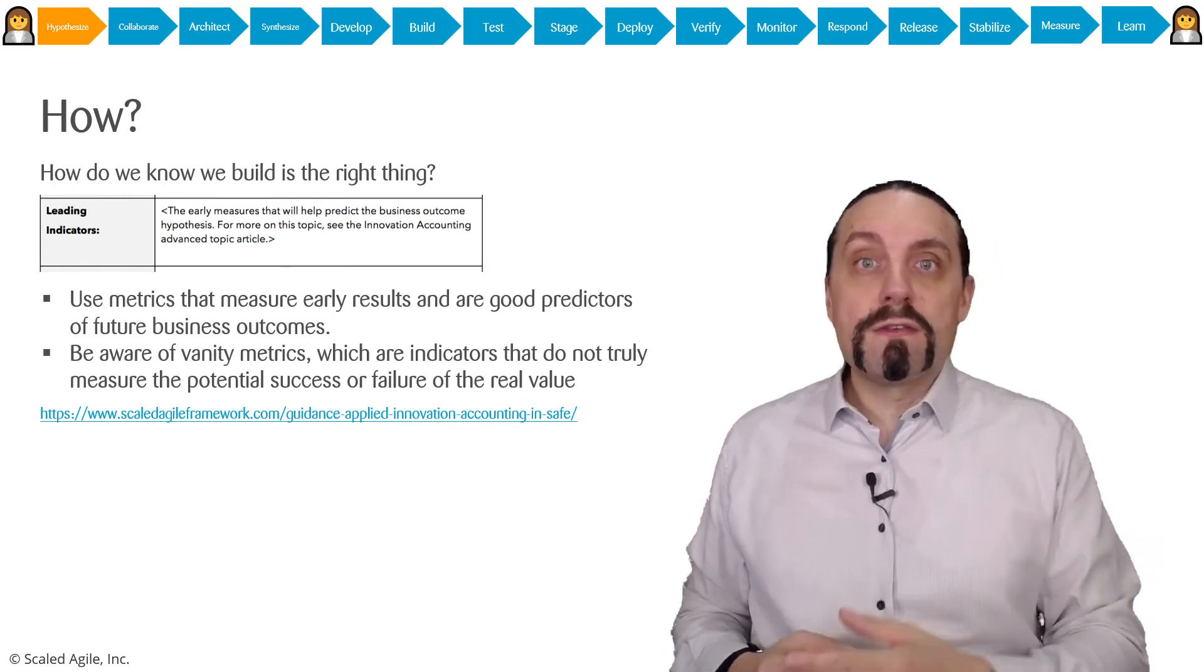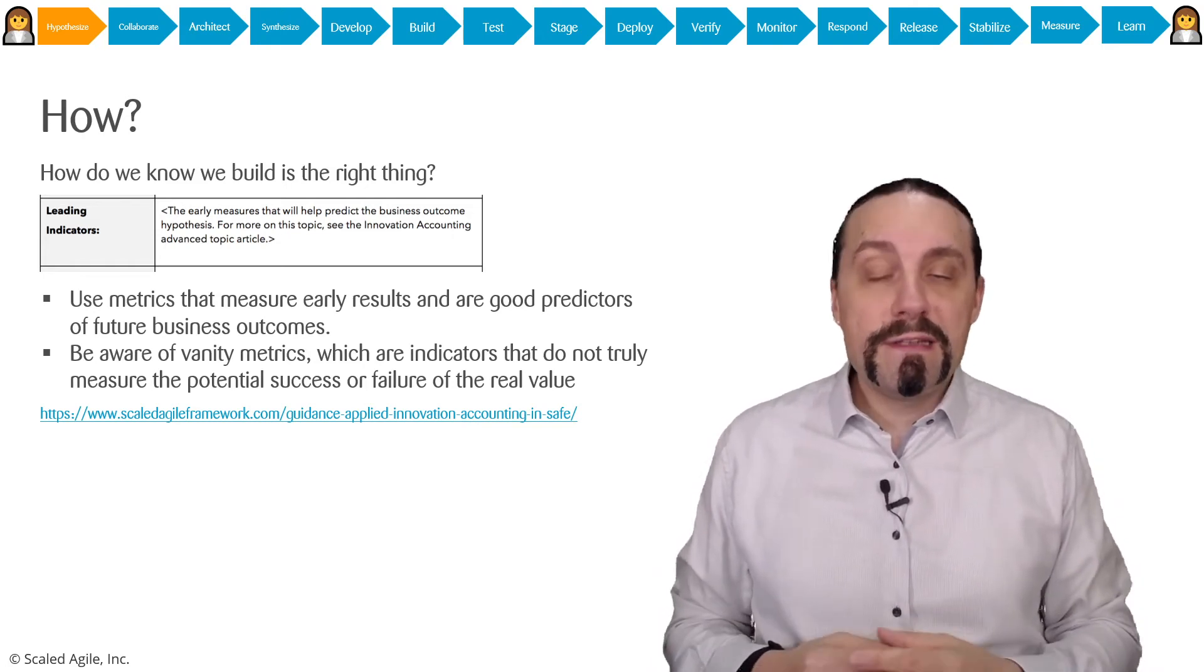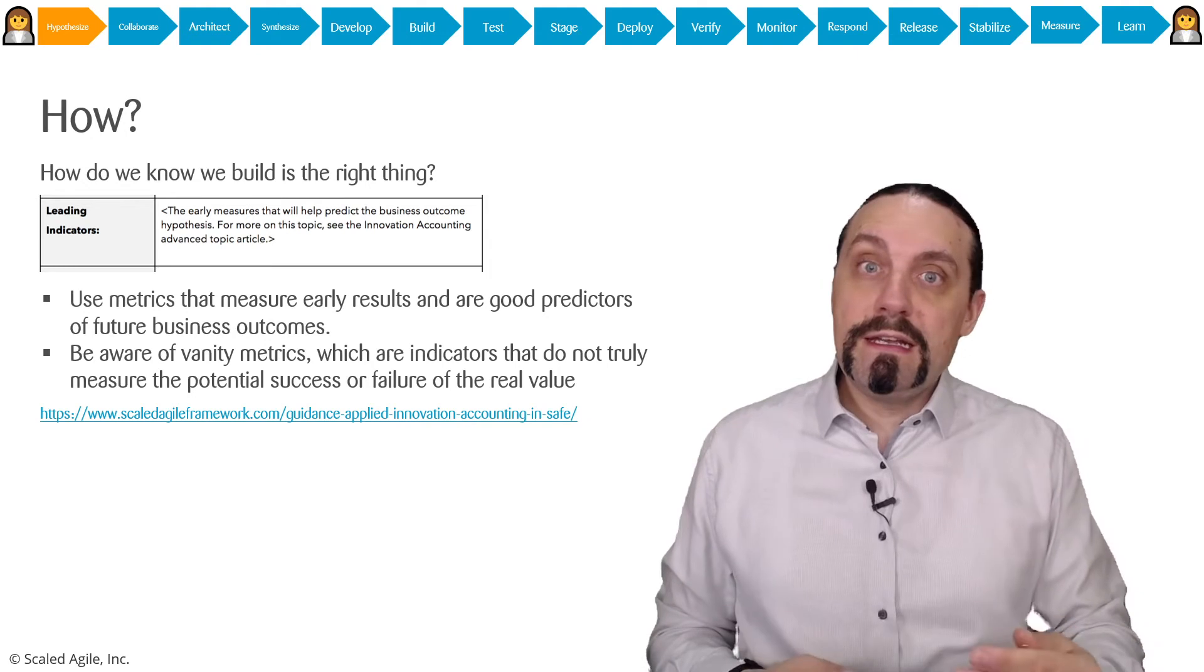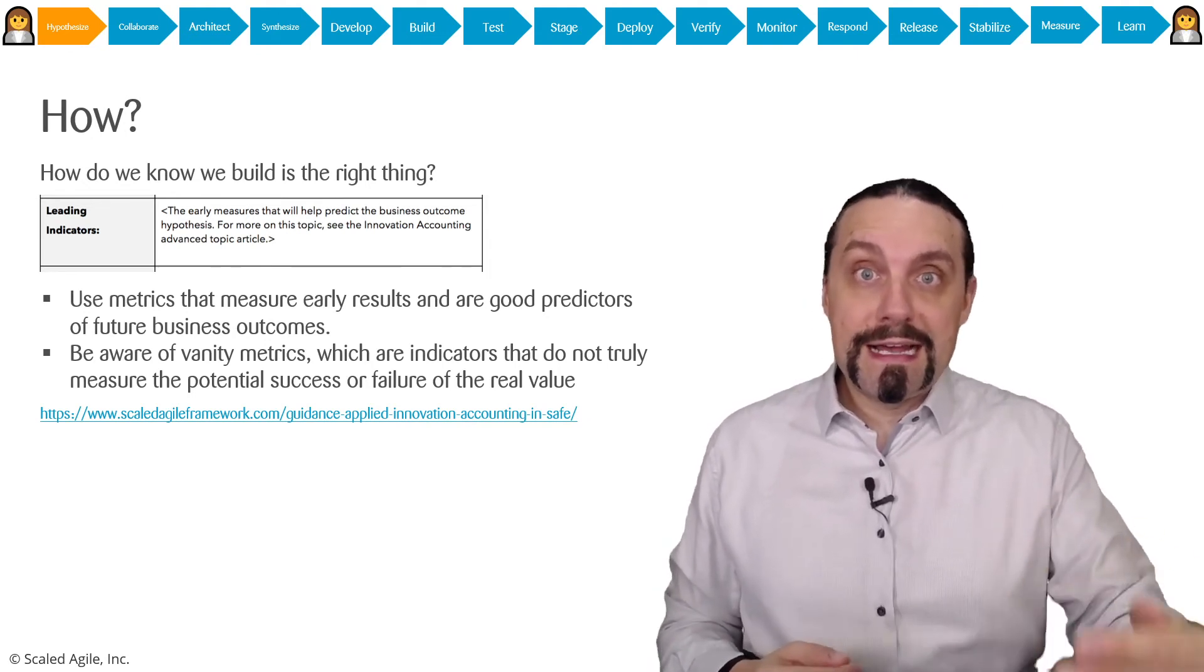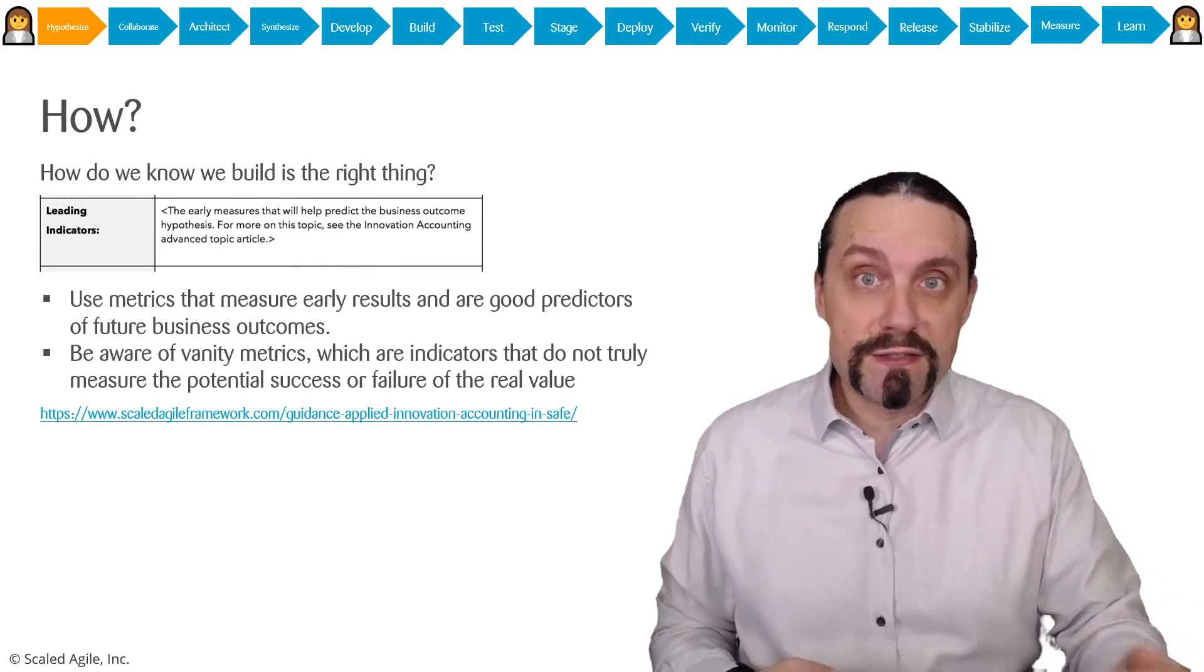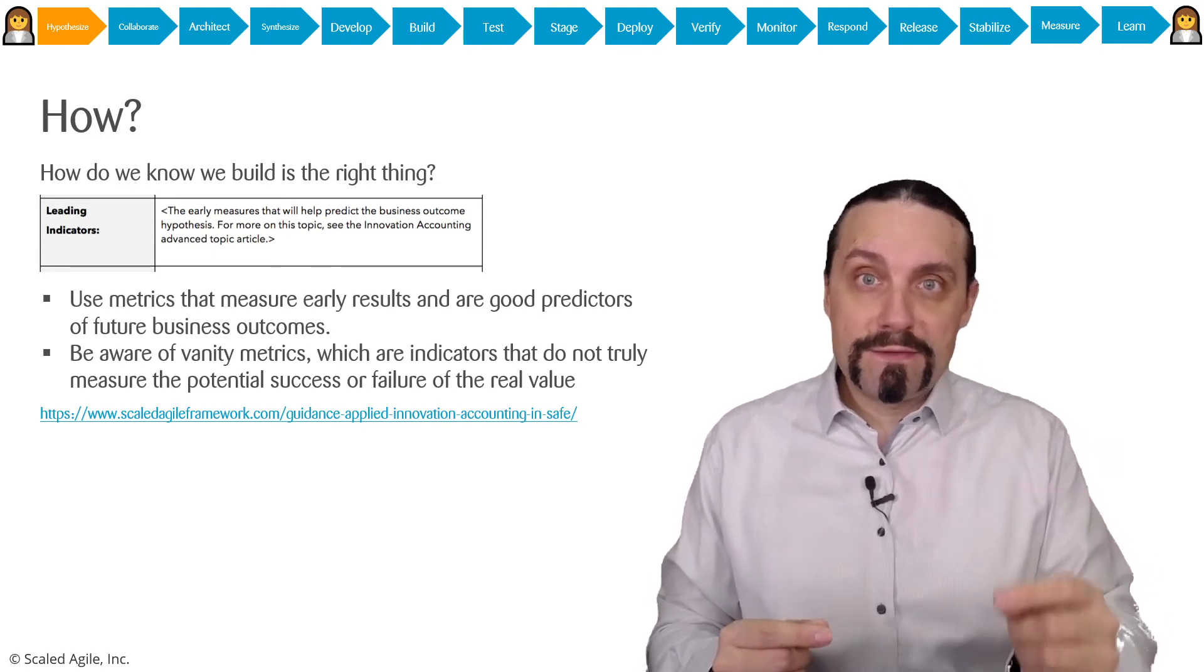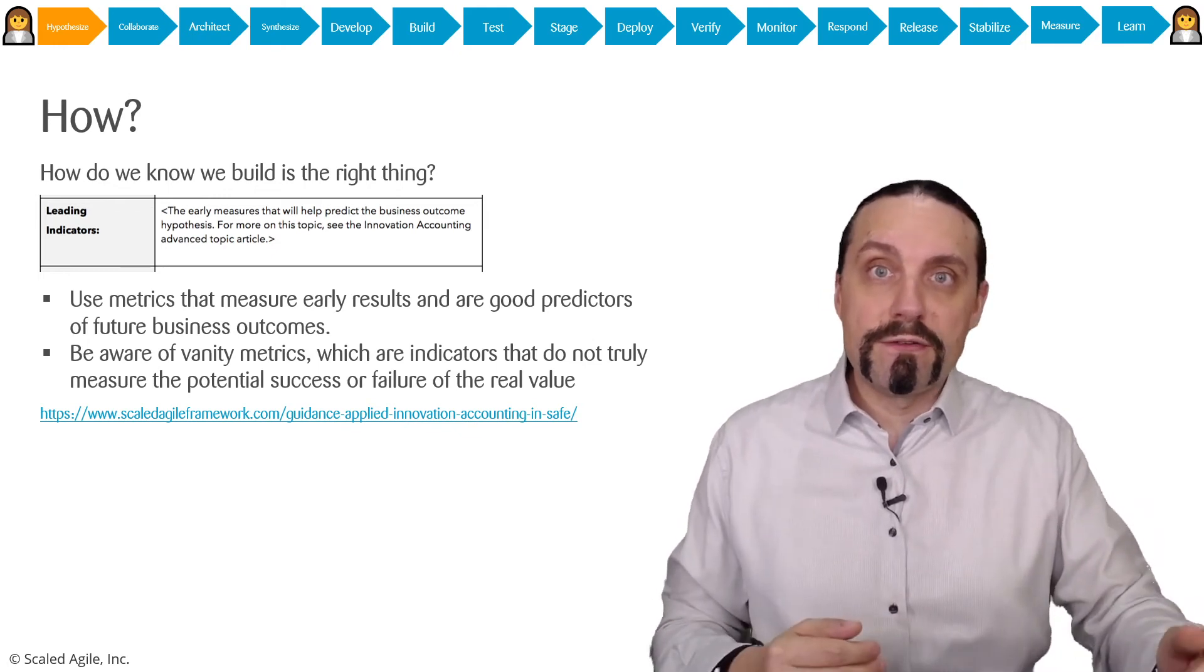So now how do we know really know that we are building the right thing? We know because of the epic hypothesis statement. There we have the leading indicators. The leading indicators they are metrics which measure if we are building the right thing and it has the desired impact and our hypothesis is true. And remember these are leading indicators. So we need to measure as fast as possible not in a half year or in a year.